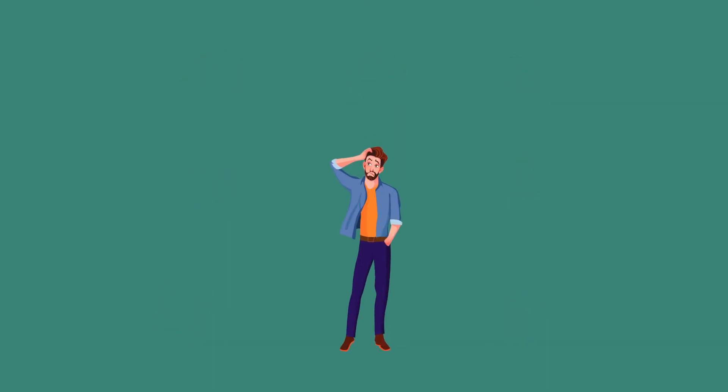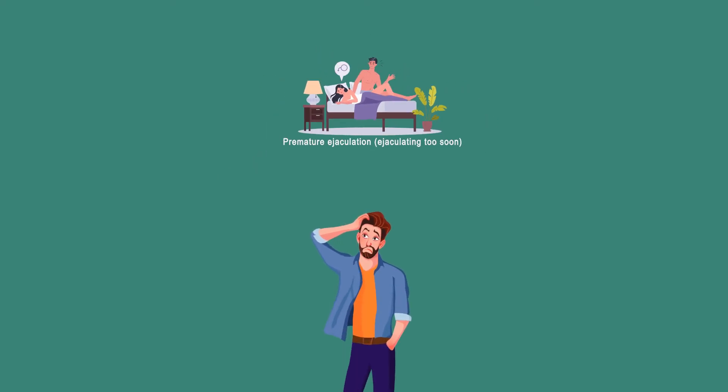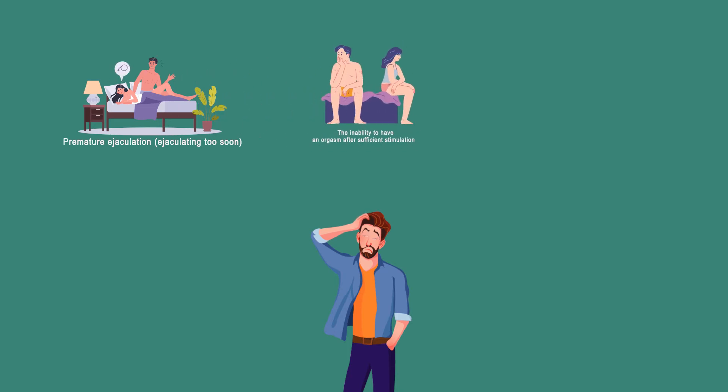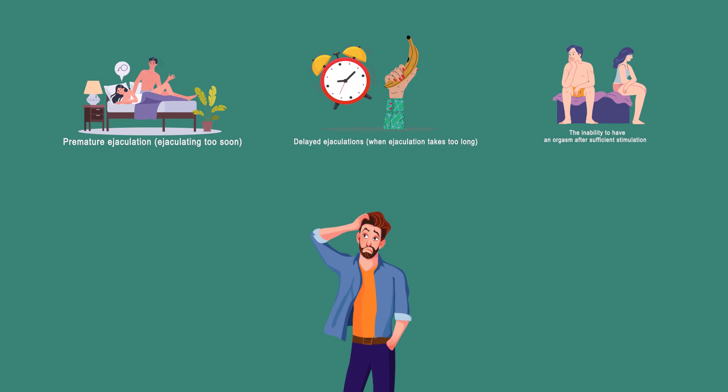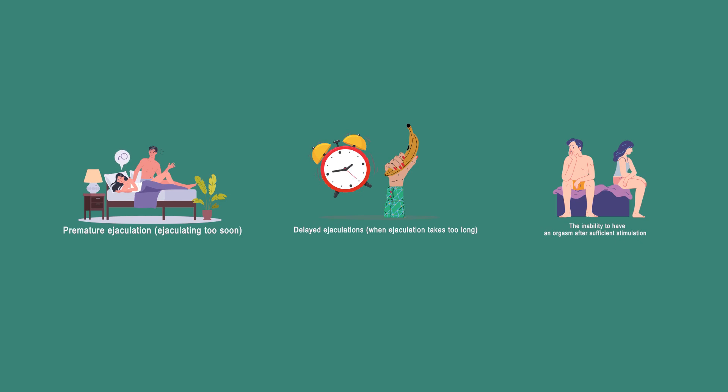Some sexual disorders are related to ED and may cause similar symptoms, such as premature ejaculation (ejaculating too soon), inability to have an orgasm after sufficient stimulation, or delayed ejaculation (when ejaculation takes too long). A man is considered to have ED when these symptoms occur regularly.